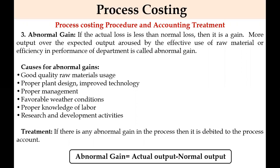Both normal loss and abnormal loss are credited to the process account, whereas abnormal gain is debited to the process account. Causes of abnormal gain include good quality raw material, proper plant design, improved technology, proper management, favorable weather and working conditions, proper labor knowledge, and research and development activities. Formula: Abnormal Gain = Actual Output minus Normal Output.